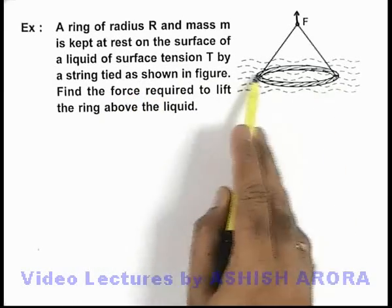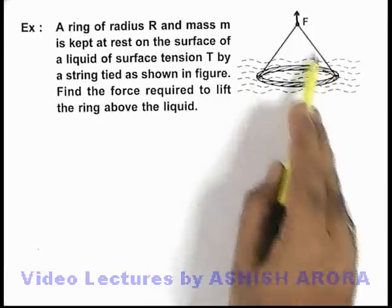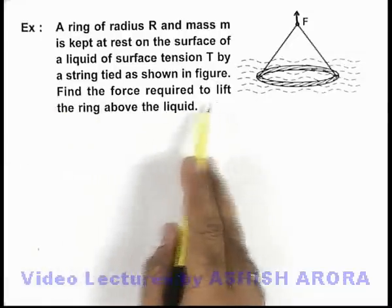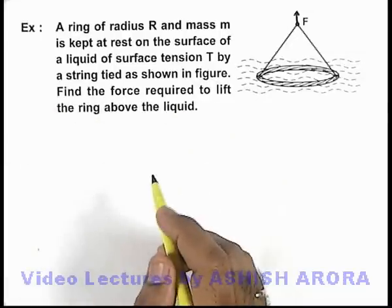Here, at the two diametrical ends, a string is tied and a force is applied in the upward direction. We are required to find the force required to lift the ring above the liquid.